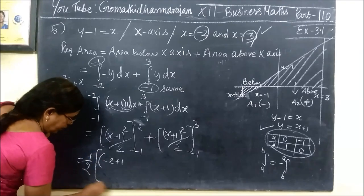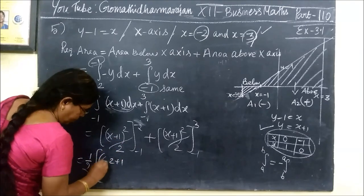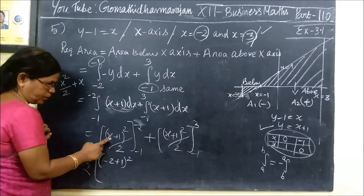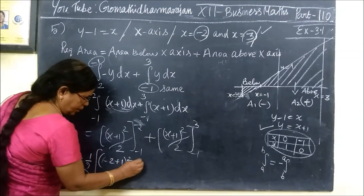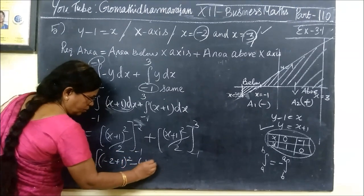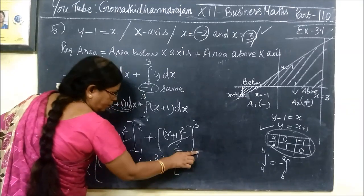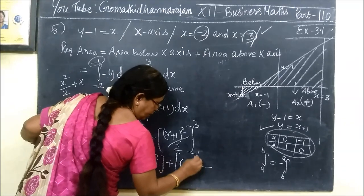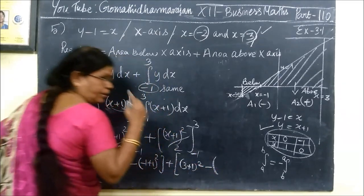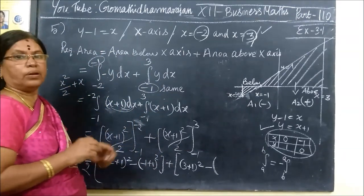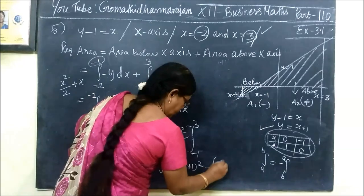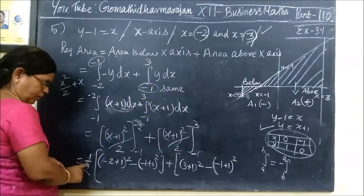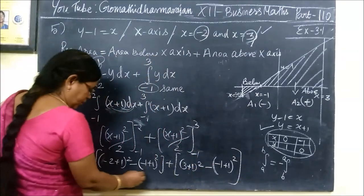It is half times minus 2 plus 1 whole square, minus minus 1 plus 1 whole square, plus 3 plus 1 whole square, minus minus 1 plus 1 whole square, divided by 2.